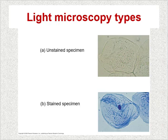The two types of microscope slides you will commonly see are unstained specimens and stained specimens. Unstained specimens represent the natural specimen. Stained specimens have been dyed a certain color so that you're able to see structures a little bit better and more clearly.